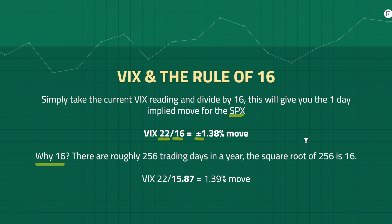Why are we using 16 in the calculation? There are roughly 256 trading days in a year and the square root of 256 is 16. If you want to be a little more precise you can use 15.83, but it will more or less give you the same reading.